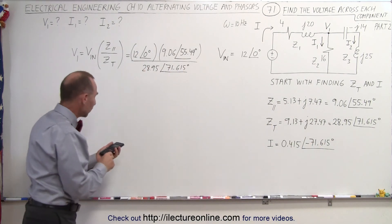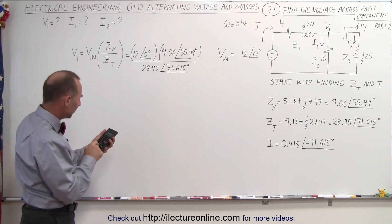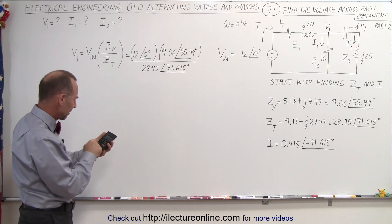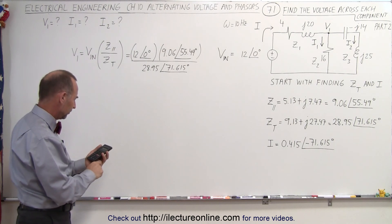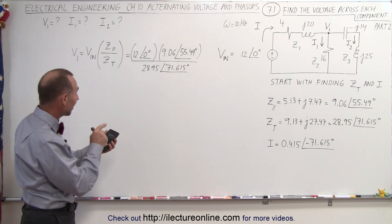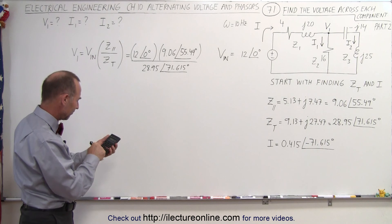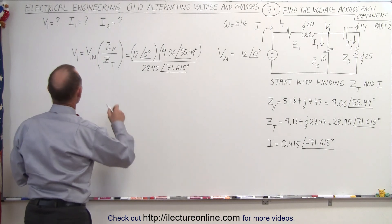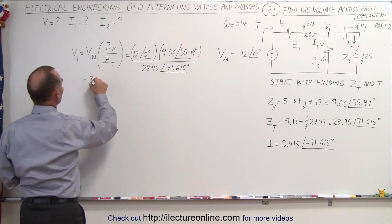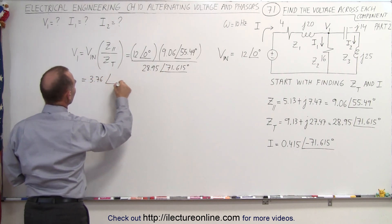So we take 12 times 9.06 divided by 28.95, and that gives us 3.76. So the voltage at branch 1 is 3.76. That's the magnitude.